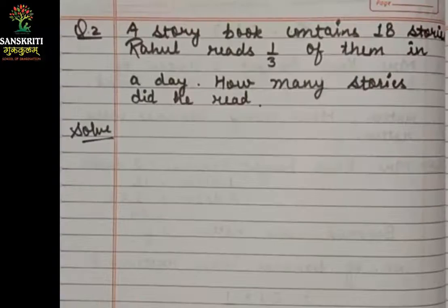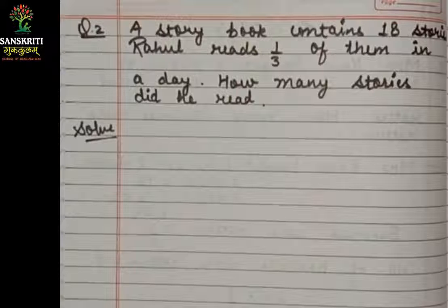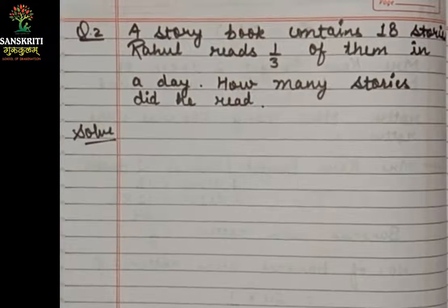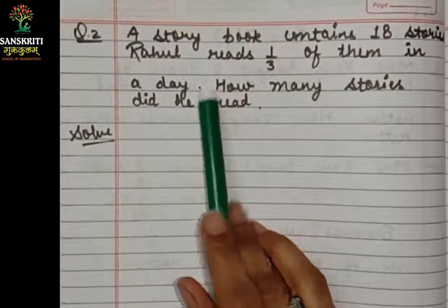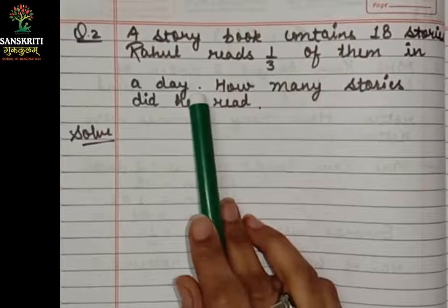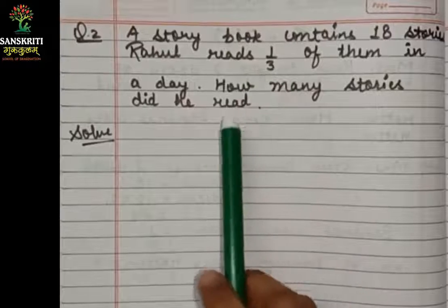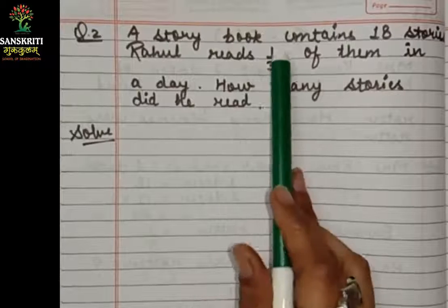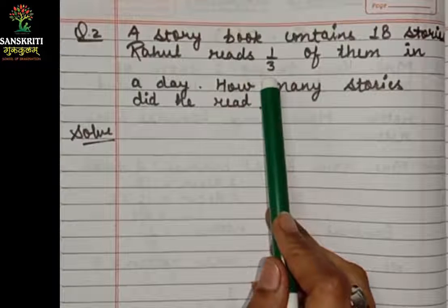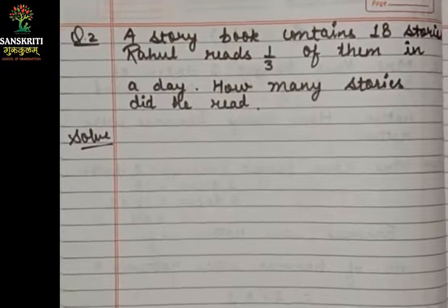Next, Question Number 2. A story book contains 18 stories. Rahul reads 1 by 3 of them in a day. He has been given a fraction of 1 by 3. The question asks how many stories did he read. We don't know the number of stories read, so we will find that number.